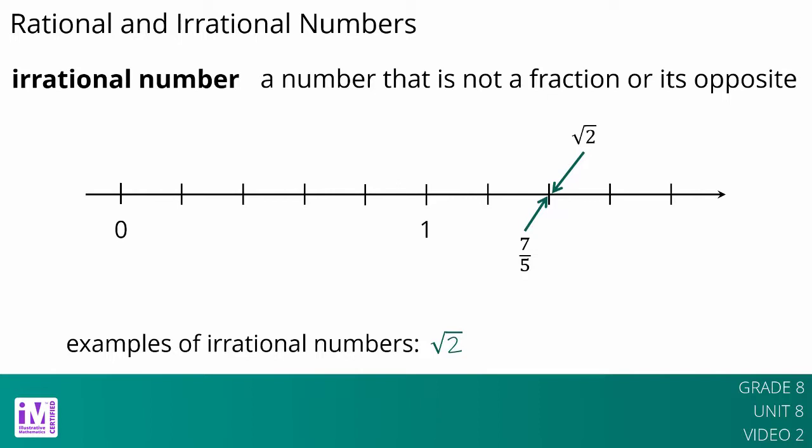It turns out that the square root of any whole number is either a whole number, like the square root of 36 equals 6, or irrational, like the square root of 17. Here are some examples of irrational numbers.